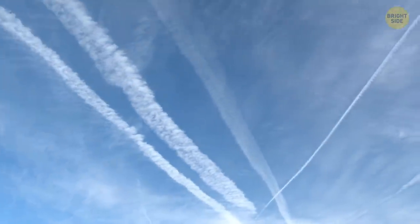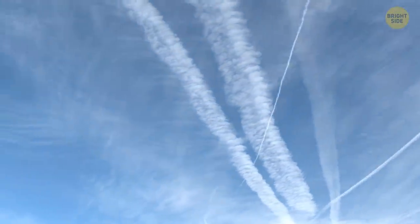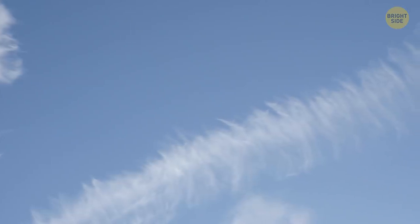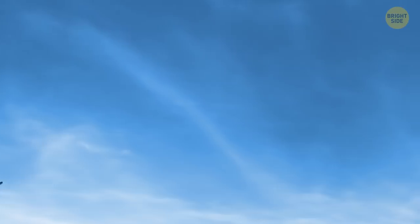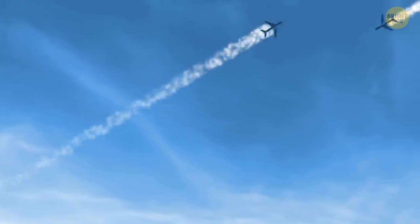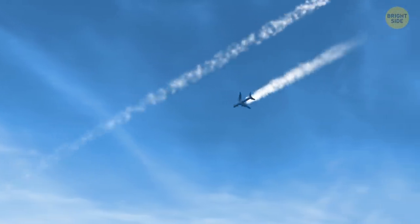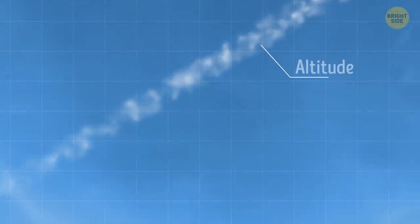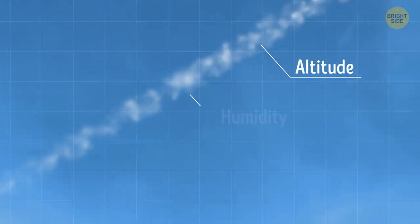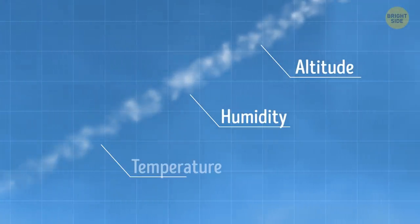Contrails can have different thicknesses. They can stay in the sky for hours or disappear after several minutes. They can stretch for miles or be rather short. Everything depends on the altitude and the humidity and temperature up there.